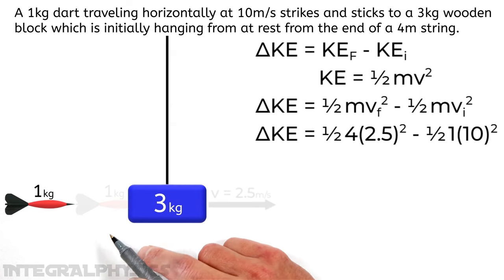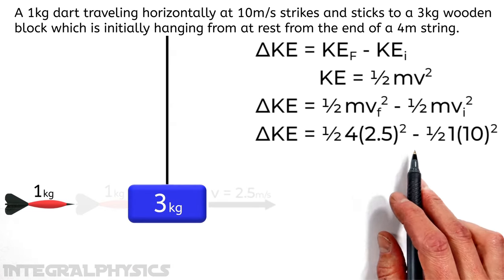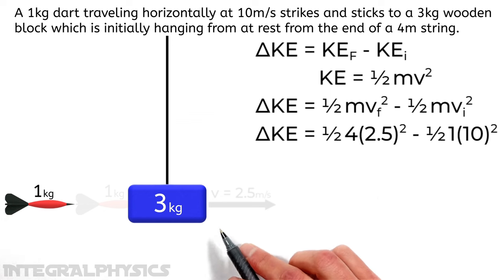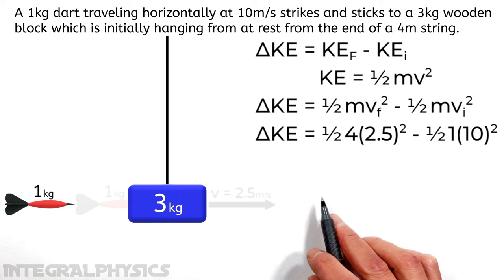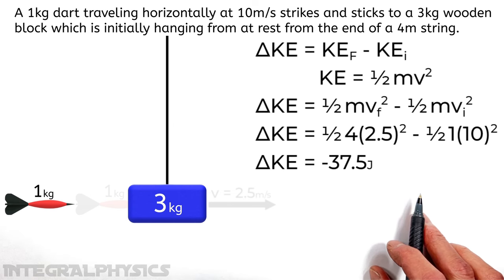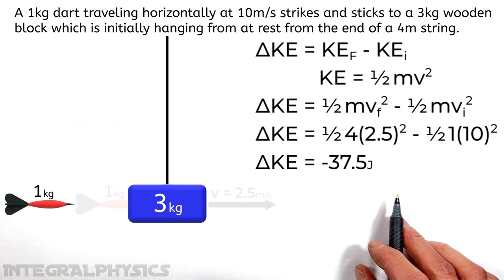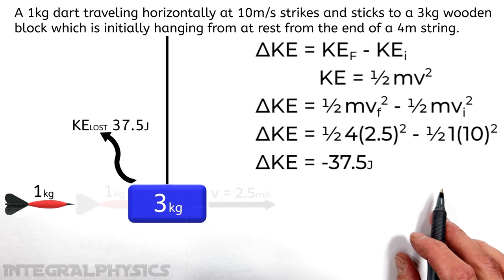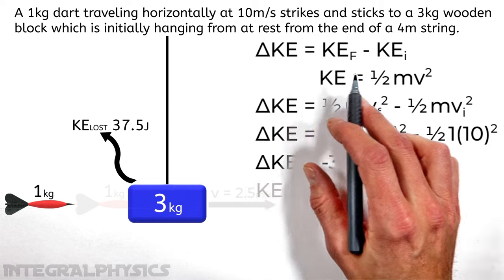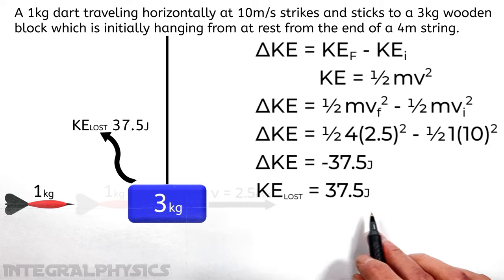Now before the collision, we had just the dart moving along at 10 meters per second. And the block wasn't moving at all. So you'll see that had zero kinetic energy. Meaning our total change in kinetic energy was negative 37.5 joules. It's negative because there was a loss of energy. Now technically, if we're looking for a loss of energy, we'd represent this result as a positive value.